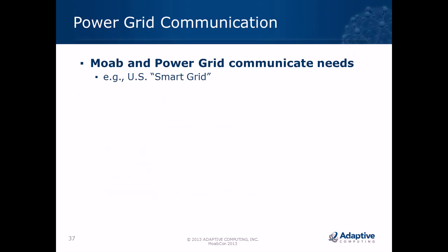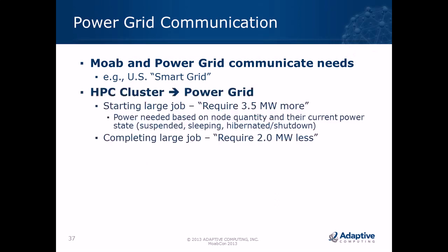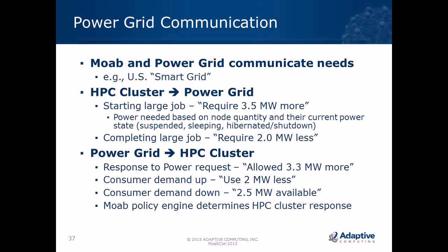The future vision is bidirectional communication with the power grid — the smart grid concept, already in use in some industries. For a very large HPC cluster needing to power up 10,000 nodes, that might require three additional megawatts; you'd need to communicate this demand to the power grid. Response time depends on the power generation source — a coal-powered plant takes up to an hour, natural gas a few seconds. Conversely, when completing a job, you notify the grid you're releasing power. The grid can also communicate back — for example, requesting you reduce usage by two megawatts during peak demand periods.